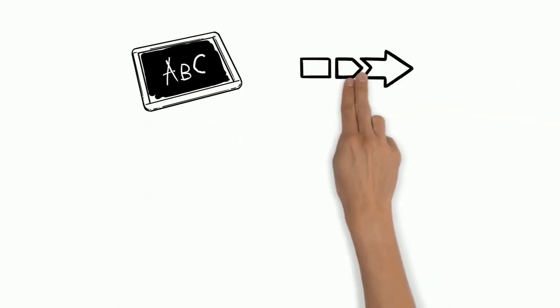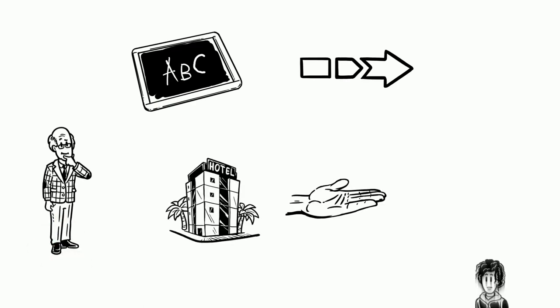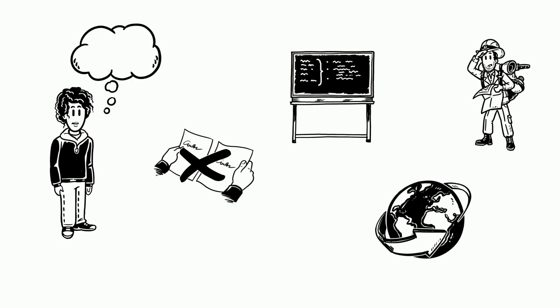Once their school years were over, they had to make decisions about their futures. As the father was too old to run the hotel, he handed it over to his son. Erik had to forget his dreams about being a teacher and exploring the world.